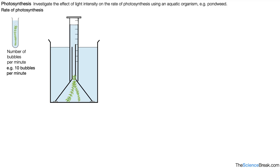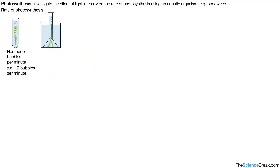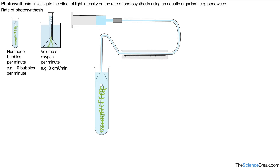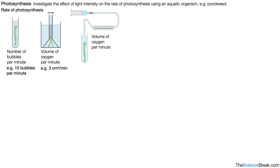A second way is we could measure the volume of oxygen gas produced. There are bubbles of gas and that gas collects at the top of a measuring cylinder. An example would be the volume of oxygen per minute, for example 3 cm³ per minute. A more accurate way uses apparatus where bubbles collect in a small capillary tube and the volume is measured against a scale — for example 2 cm³ per minute or 10 mm³ per minute.